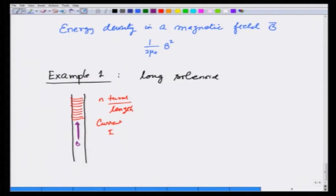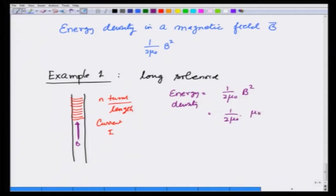The energy density is going to be 1 over 2 mu_0 times B squared. In a solenoid, B is mu_0 n I, so the energy density is mu_0 n squared I squared divided by 2.